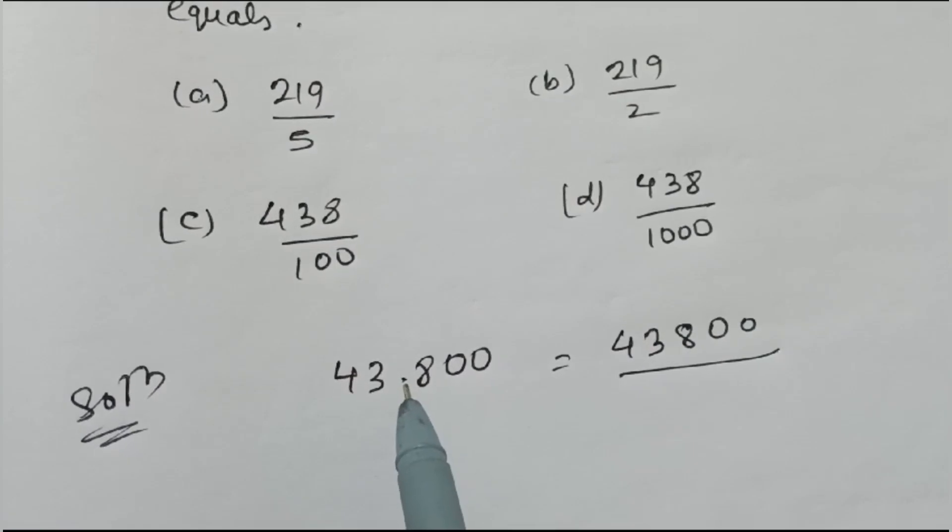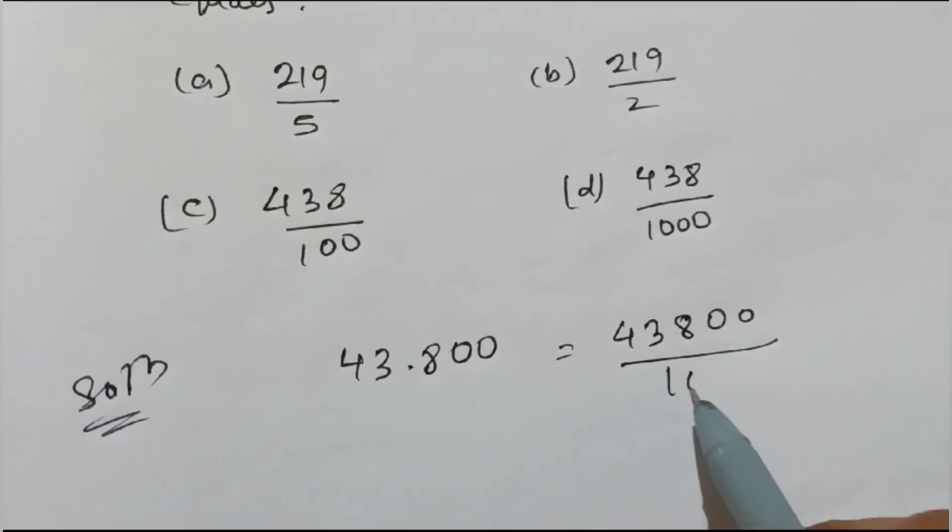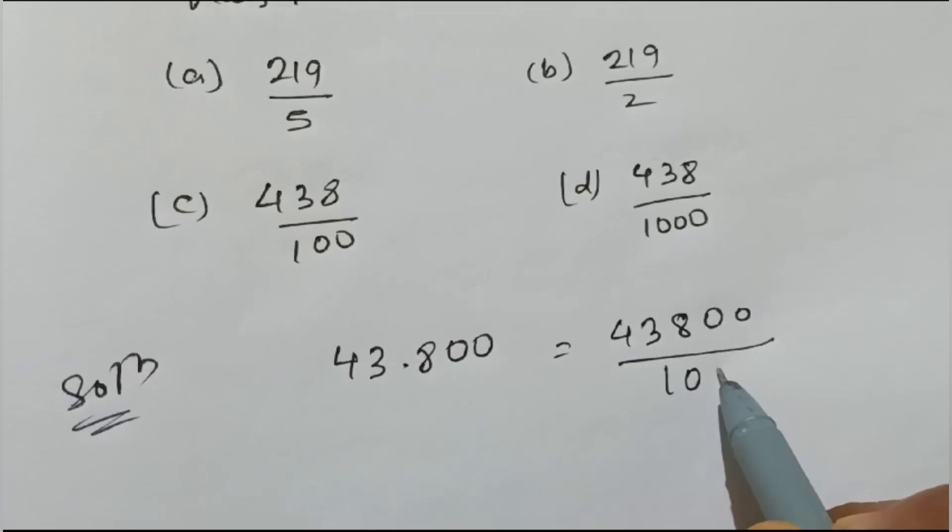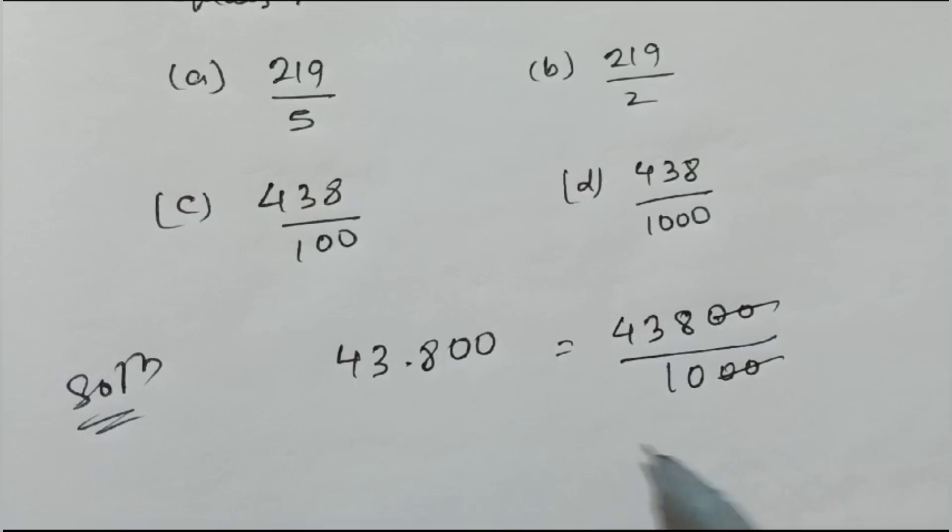You'll see after the decimal point, how many numbers can you see? Three. That means you'll write 1 down here, then you write three zeros - 1000. Okay, then you cut the zeros. Two zeros you can cut.